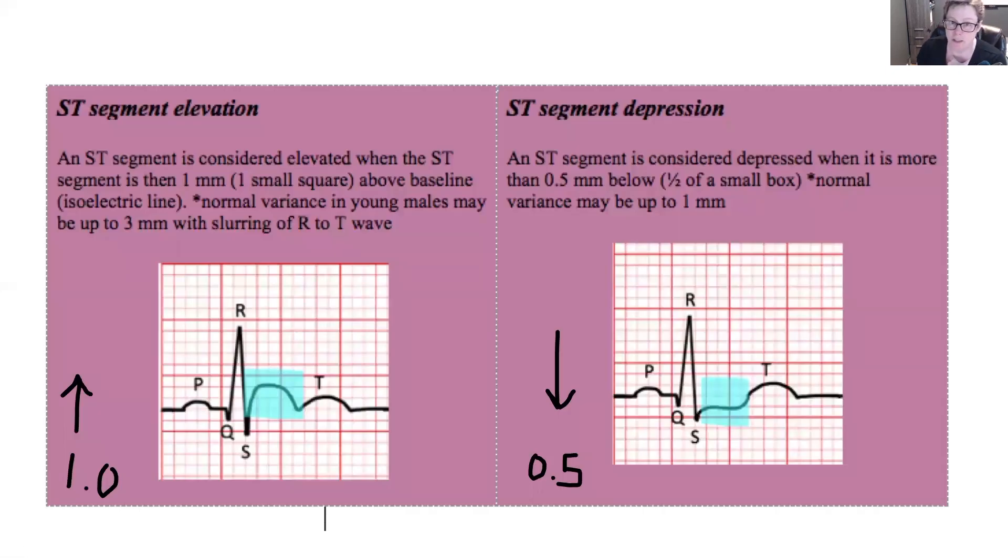When the ST segment is not on baseline, then we want to look to see if it's elevated, or if it's below the baseline. So here we have an example where it's elevated. So I have my isoelectric line, and all of a sudden, whoa, where did that ST line go? That's pretty high up there. This would be called ST elevation, because it's above baseline. An ST segment is considered elevated when it is greater than one millimeter, and one millimeter is the same as one small square, above baseline. So it doesn't have to go very far in order to be considered an elevation. This may also be normal in young, healthy adults, so you just want to make sure it's matching the clinical picture.